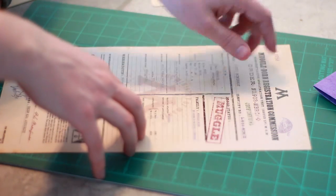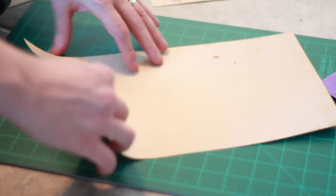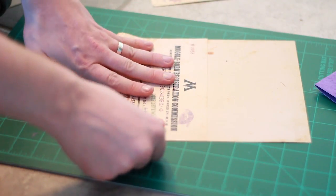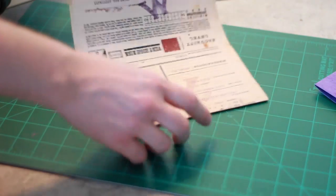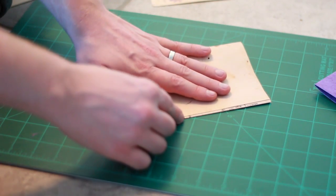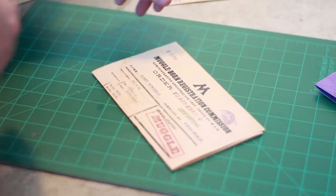Now with the Muggle-born registration, we just want to fold it three ways. So just fold it in thirds, about right here, and then another fold right there. So it should end up just about like this.